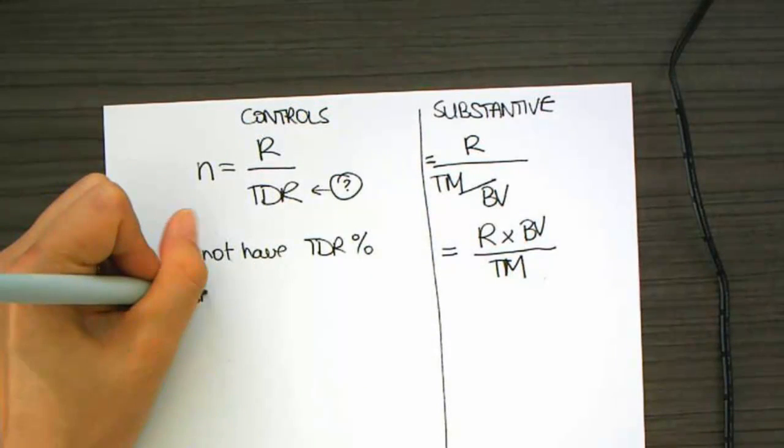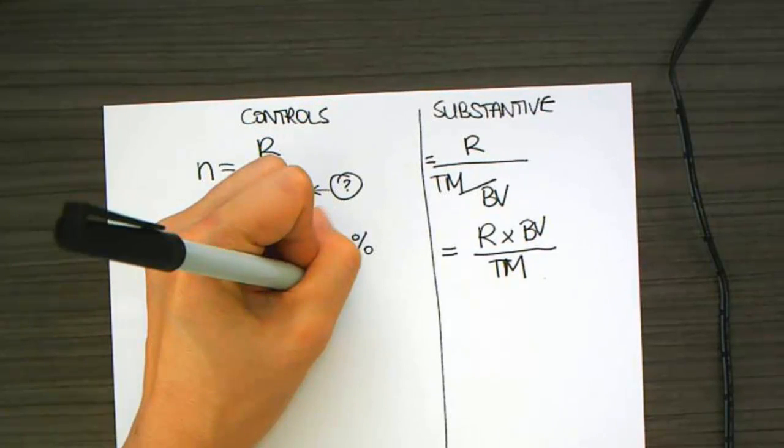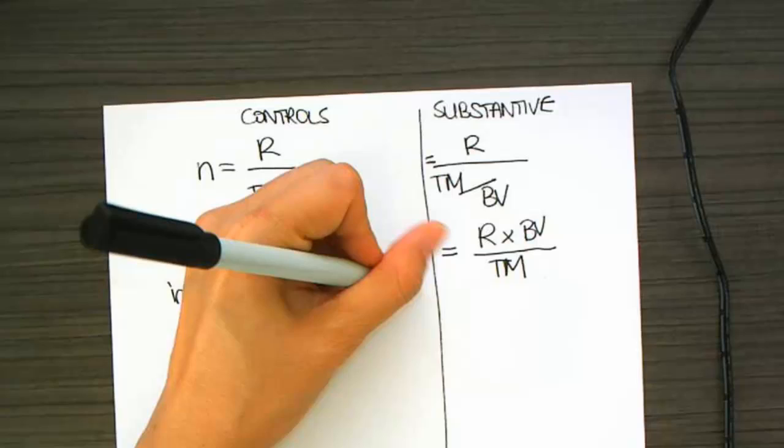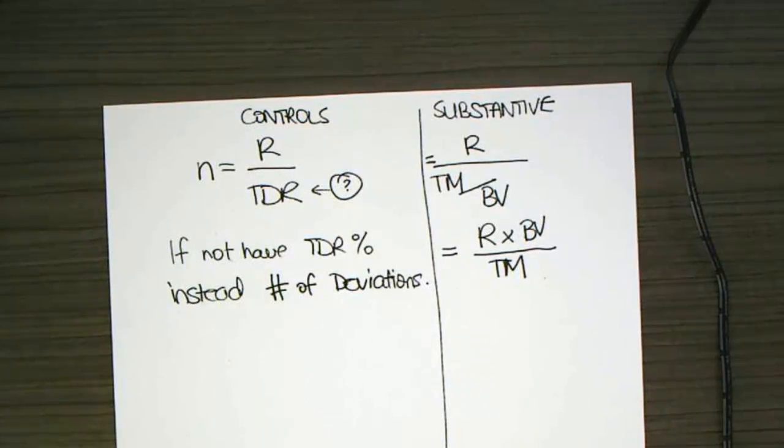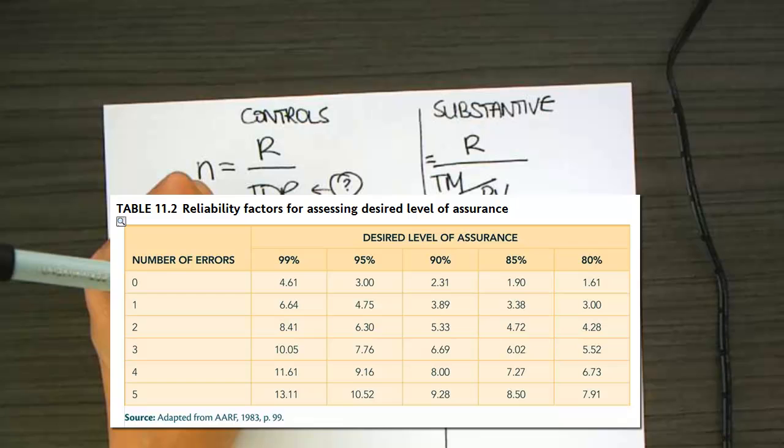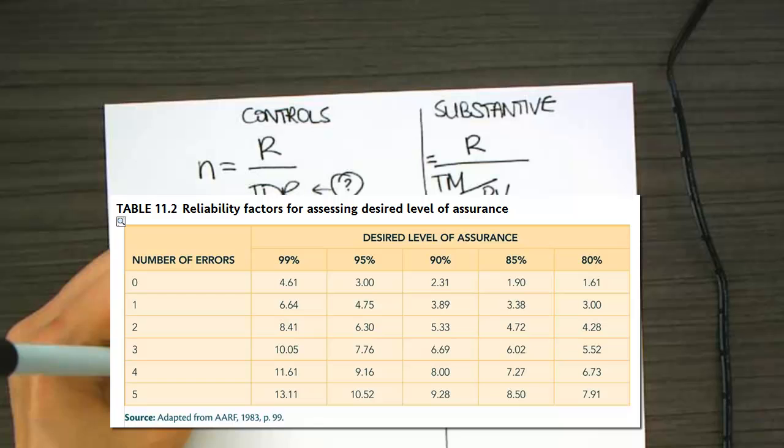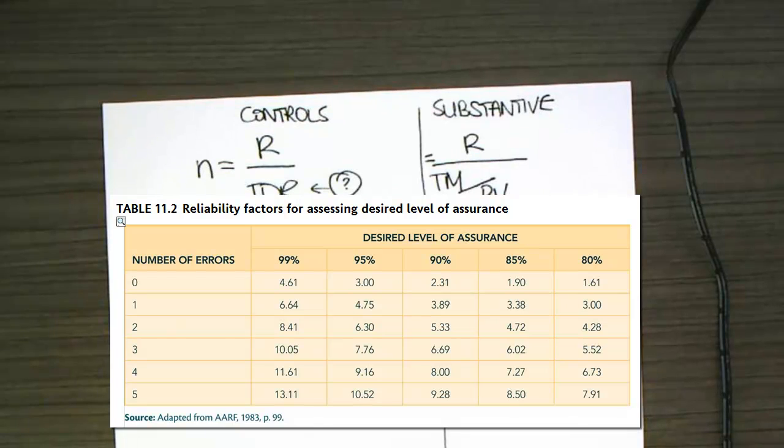Alright. So, if you don't have a number, sorry, if you don't have the actual percentage, you can use- oh, sorry, one table's there. We do use table 11.2. My bad, that's the wrong table. Alright. So, in all of these, we're going to calculate a reliability factor, a tolerable deviation rate, to give us the number in the sample.